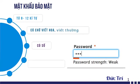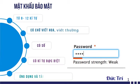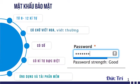Để thiết lập một mật khẩu an toàn, chúng ta cần lưu ý là mật khẩu phải có từ 8-12 ký tự, bao gồm các ký tự viết hoa, viết thường, ký tự đặc biệt và phải có số.